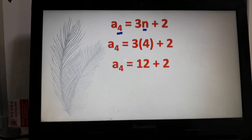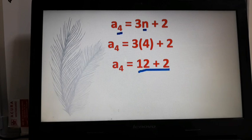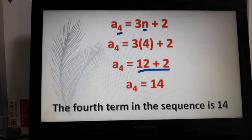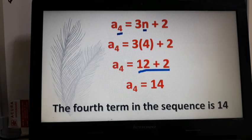Multiply 3 and 4, that will give us 12. And then 12 plus 2 will give us 14. So the fourth term in the sequence is 14.